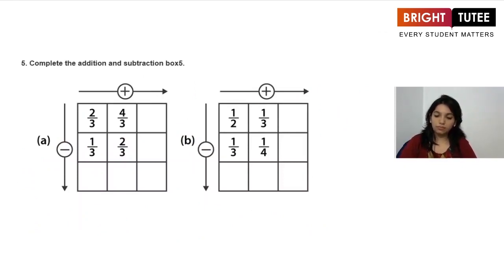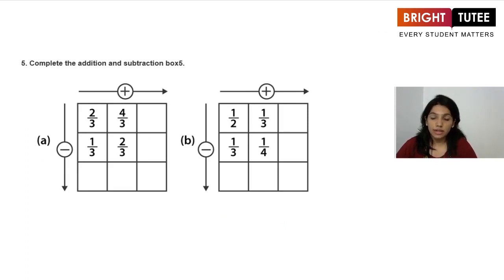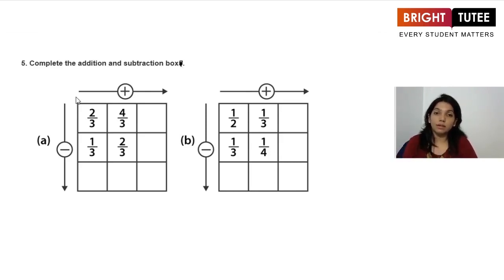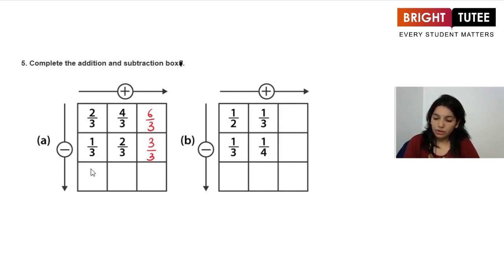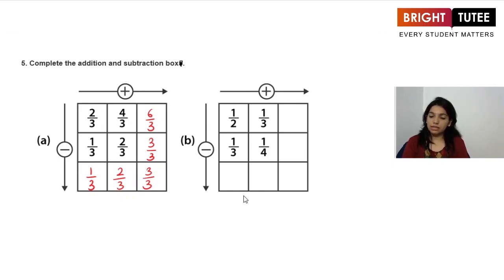Moving ahead, this part of the video is all about solving problems on adding and subtracting fractions. We are given a box with fractions: moving left to right means addition, moving top to bottom means subtraction. These are like fractions with denominator 3. Adding 2/3 and 4/3 gives 6/3. Other entries: 1/3 and 2/3 give 3/3; differences are 1/3, 2/3, and 3/3.